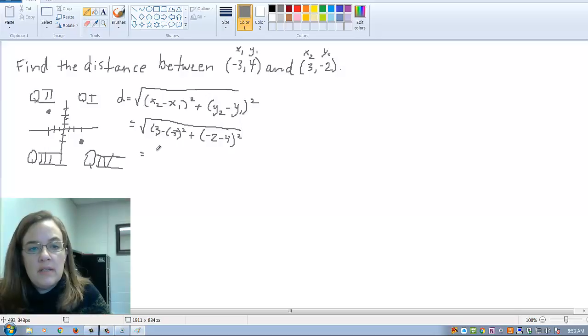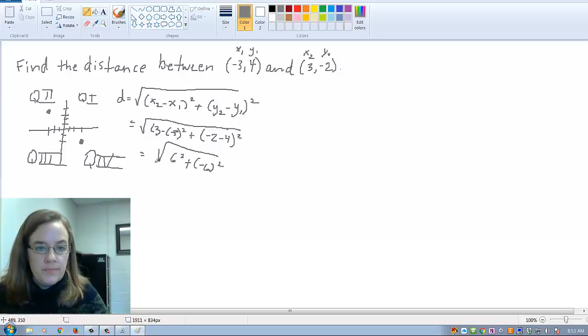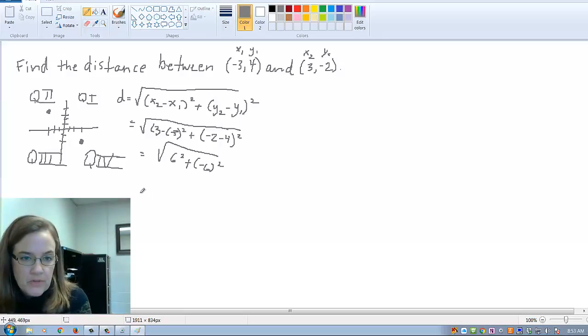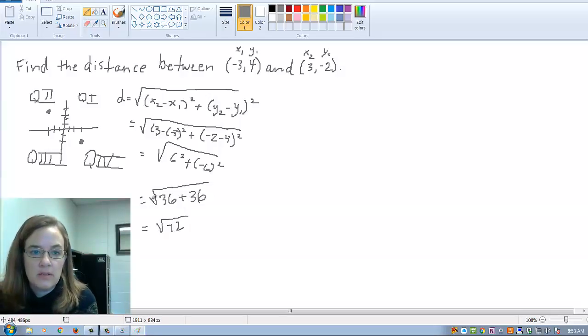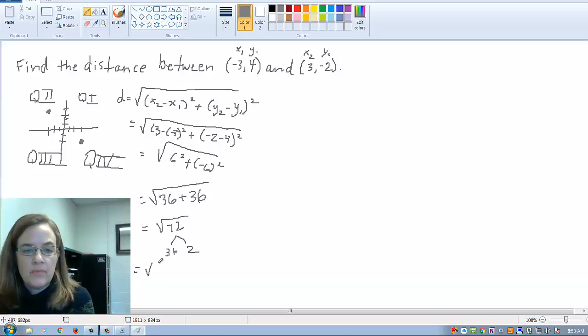We see that this is going to be 6 squared, and this is -6 squared. So, when we have this, this is going to be 36 plus 36, which is square root of 72. Now, this is actually not good enough for our distance formula. We need to reduce this a little bit more. I'm going to break this down into 36 times 2. Remember how we can separate radicals, and this is the way to do it. And so, our best answer is 6√2.